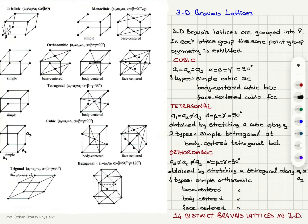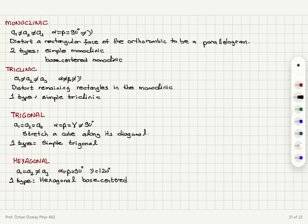After orthorhombic comes monoclinic. In monoclinic, a1, a2, and a3 are not equal. Alpha and beta are 90 degrees, but gamma is not 90 degrees. This is obtained by distorting a rectangular face of the orthorhombic to be a parallelogram.